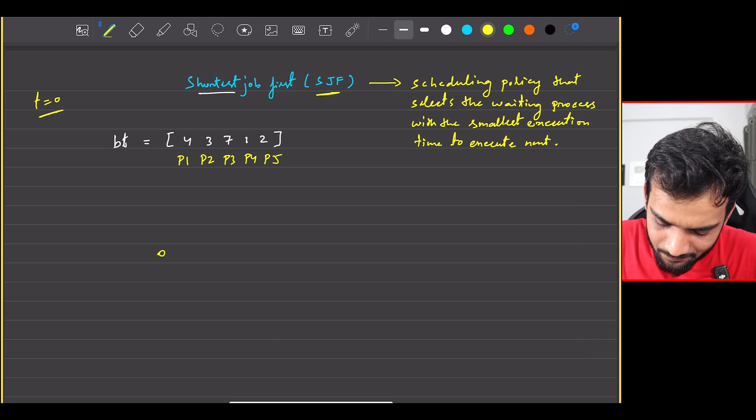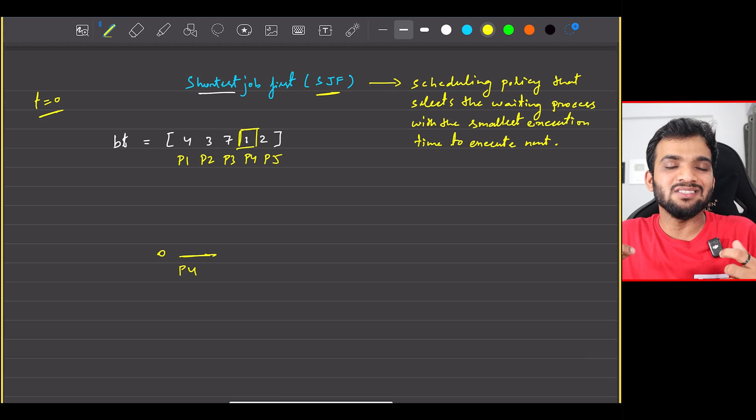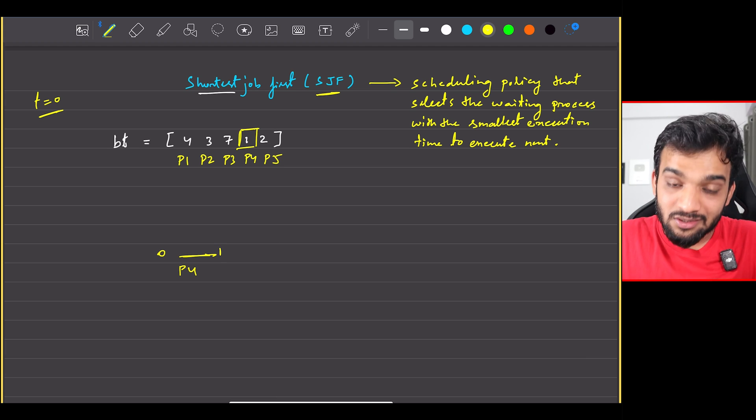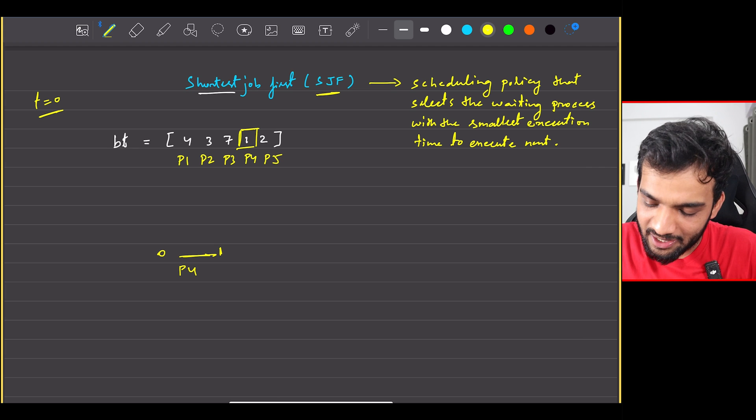Can I say that P4 is the one that will be executed first because it has the least execution time? So it will occupy the time from zero to one. So it is starting at time zero.